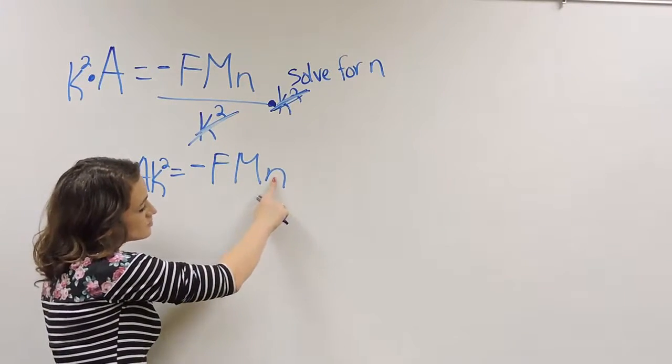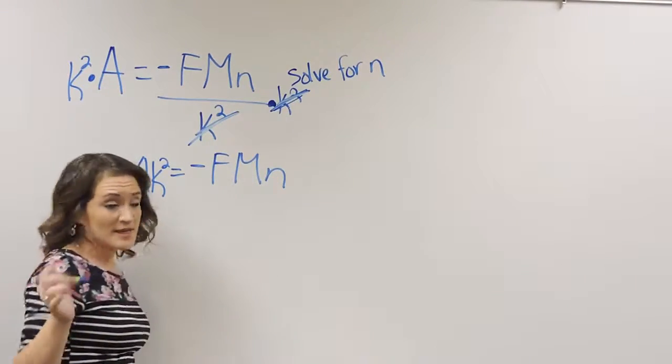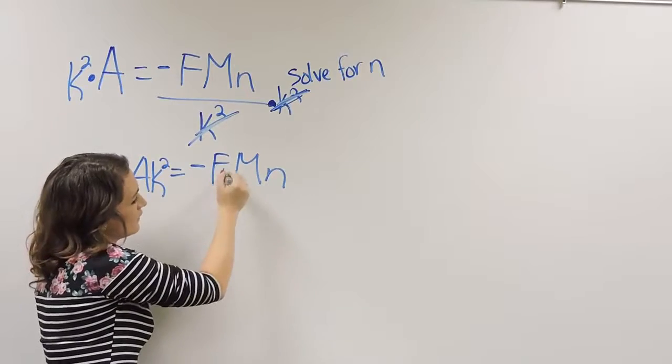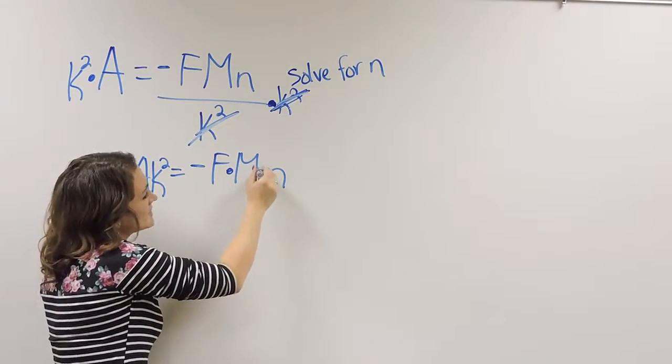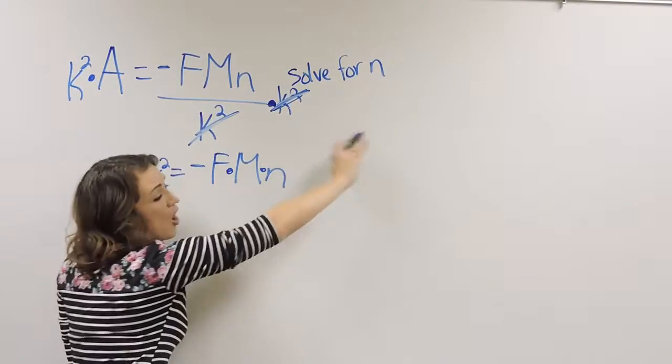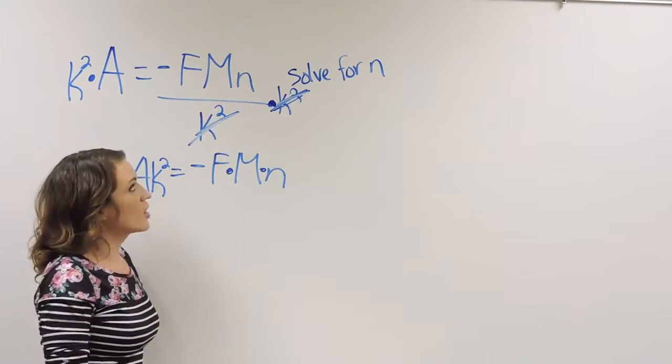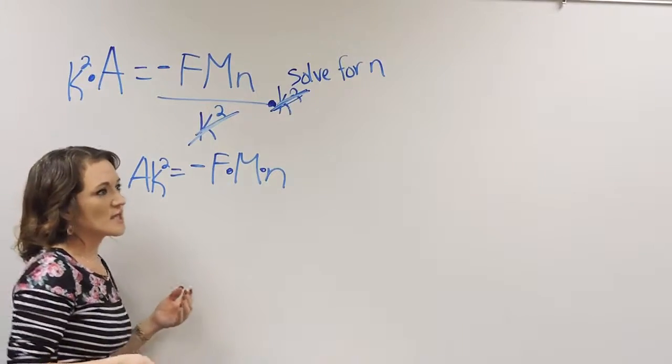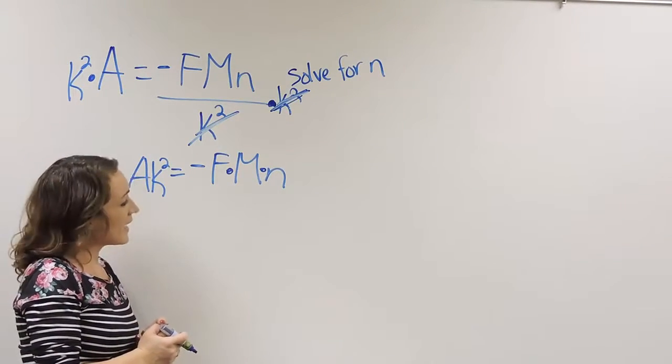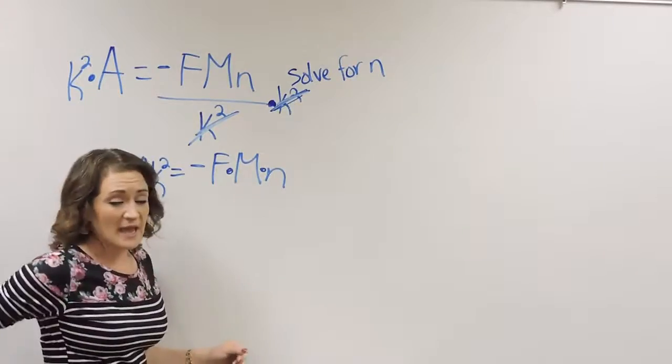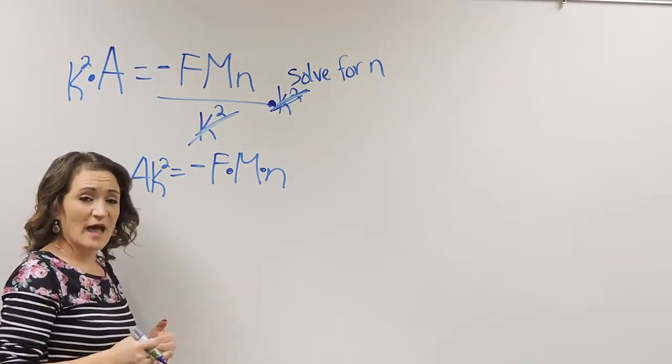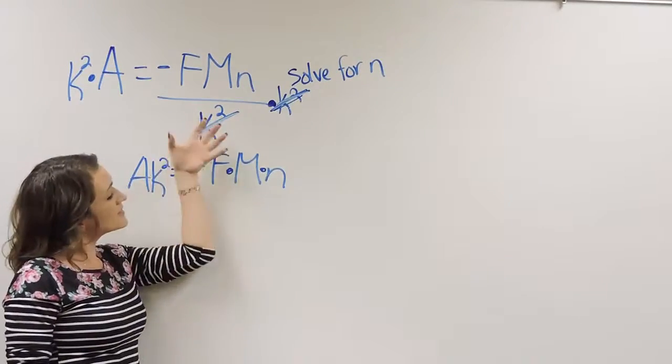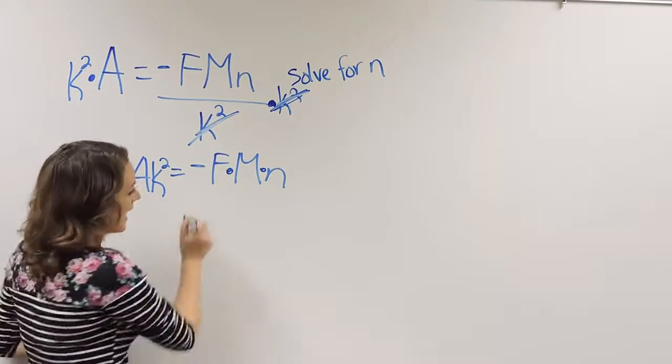My second step, I'm still trying to make it n by itself. But keep in mind, really what I have here, I have negative f times m times n. So this is really all multiplication over here. So again, keeping with our solving equation skills, solving equations, we do the opposite of what we have. So instead of multiplication, I want to divide. And since this is all multiplication, I'm going to divide everything except the n.